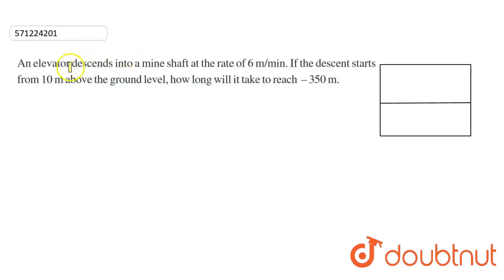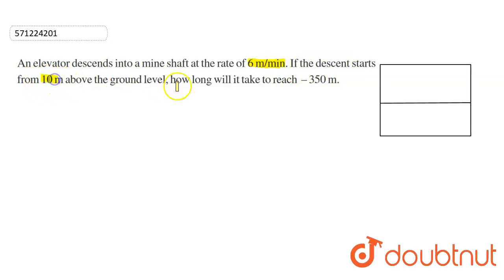So here in the question, it is given that an elevator descends into a mine shaft at a rate of 6 meters per minute. So this is our speed of descending. If the descent starts at 10 meters above the ground, how long will it take to reach minus 350 meters, that is in the downward direction.